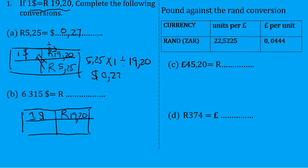But this time we must convert the dollars, so we put the dollars under dollars: 6,315 dollars. We must exchange this to rands, so we multiply across and then divide sideways. So we multiply 6,315 by 19.20 and divide by 1. Let's see what answer we get.